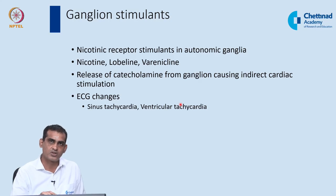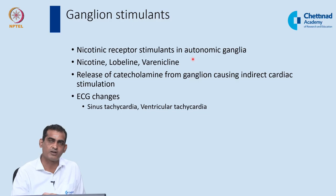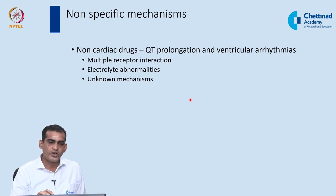The last group of indirectly acting drugs are ganglionic stimulants. Autonomic ganglia receive parasympathetic input releasing acetylcholine, which stimulates nicotinic neuronal (Nn) receptors. Ganglionic stimulation causes release of catecholamines — adrenaline and noradrenaline — which act on the myocardium, increasing force and rate of contraction. Drugs like nicotine and lobeline can cause catecholamine release, producing sinus tachycardia and ventricular tachycardia as ECG changes.